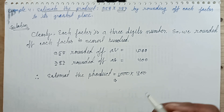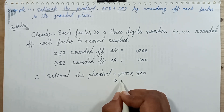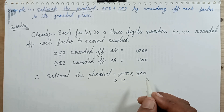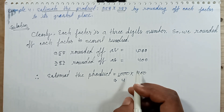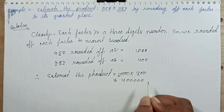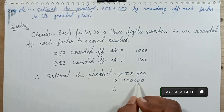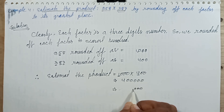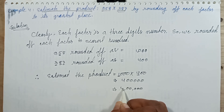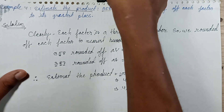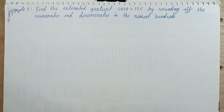Four multiplied by one is four. Count the zeros: both numbers together have five zeros — one, two, three, four, five. Separate with a comma in the Indian system: first three digits, then two digits. The answer is four hundred thousand. That's the answer. See you soon with example five.